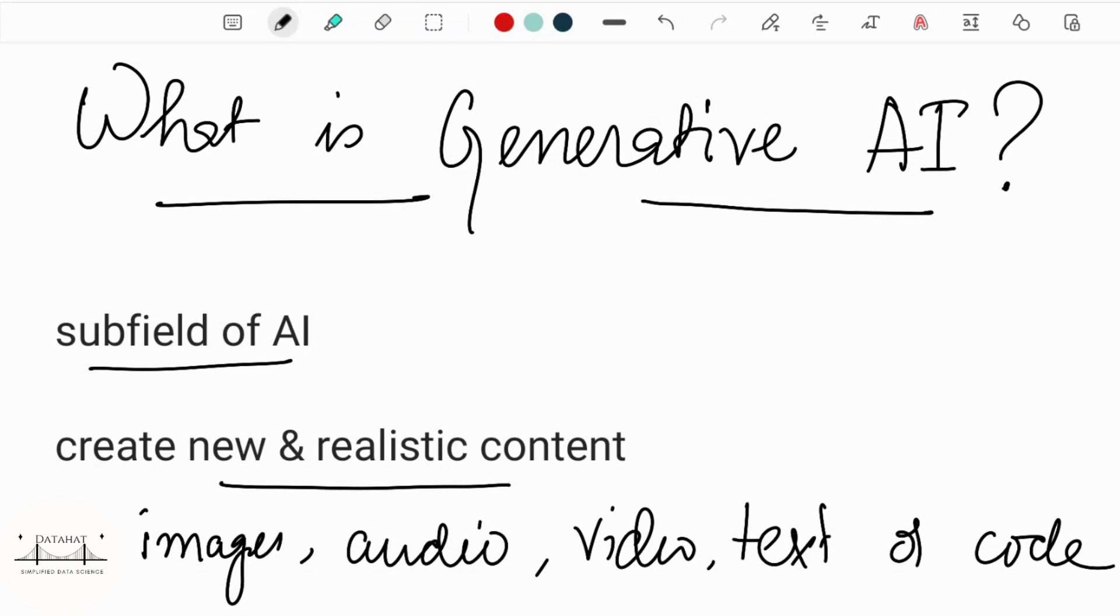It is pretty safe to assume that you would have heard and even used ChatGPT for some of your tasks. ChatGPT is a Generative AI tool. Similarly, Microsoft's Visual Bing is also a Generative AI tool that uses a prompt to generate images. DALI tool, Stable Diffusion, these are some other examples of Generative AI tools.